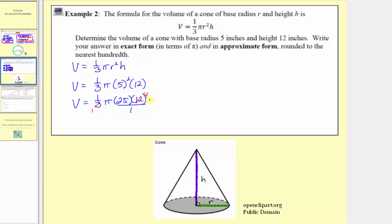Now we can multiply. Notice how the denominator is one, which means the result is pi times twenty-five times four, which equals one-hundred pi. So the exact volume is equal to one-hundred pi cubic inches.